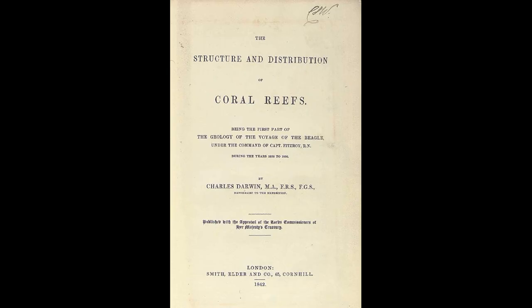In 1842, Darwin published The Structure and Distribution of Coral Reefs, being the first part of the Geology of the Voyage of the Beagle under the command of Captain Fitzroy, during the years 1832 to 1836, in which he founded a new — and still used, though with some modifications — paradigm for understanding how coral reefs form.